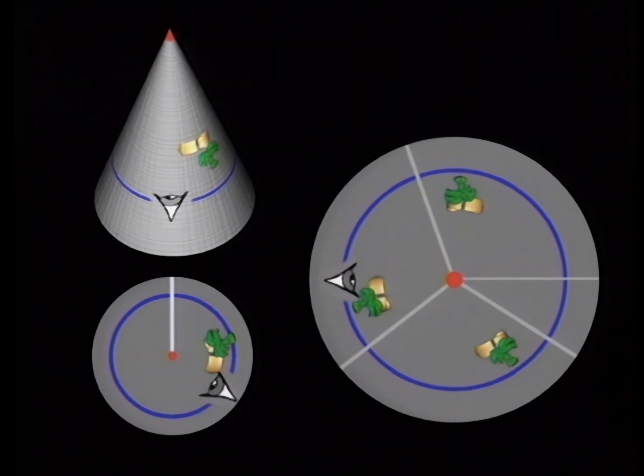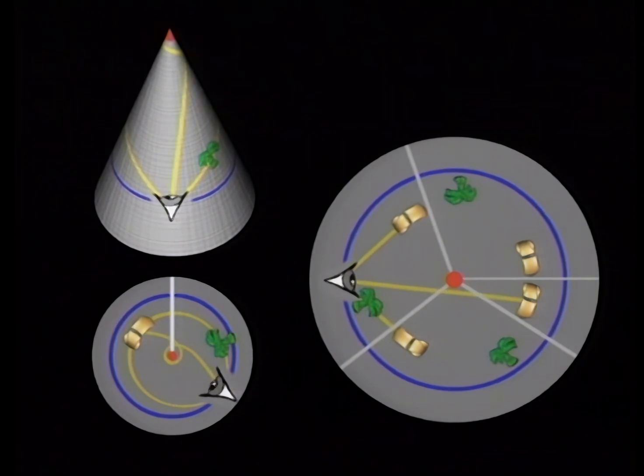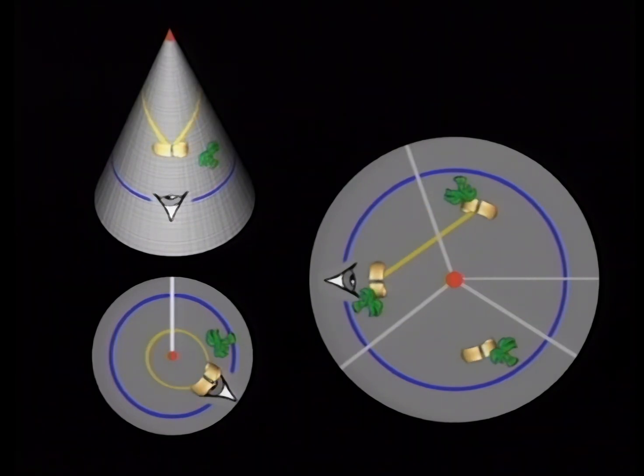Here's another way a cone surface differs from a plane. In a plane, only one straight line connects two points, but on a cone there may be several. There may even be straight paths from a point to itself.